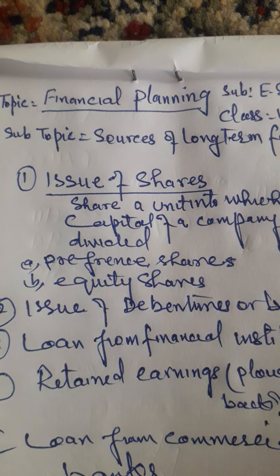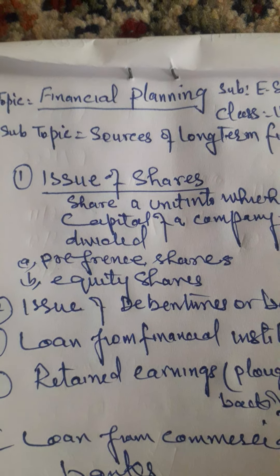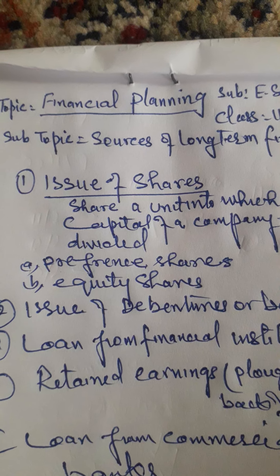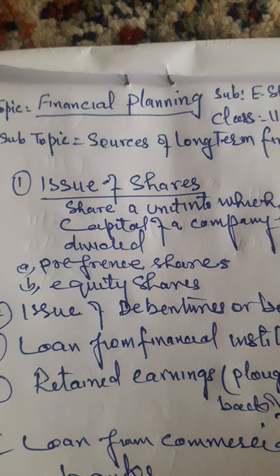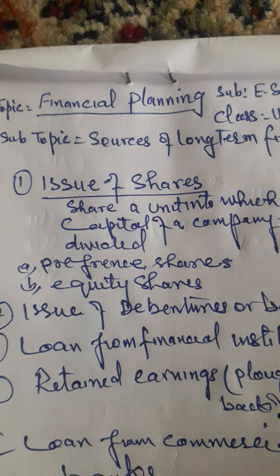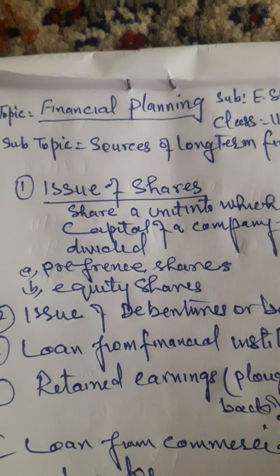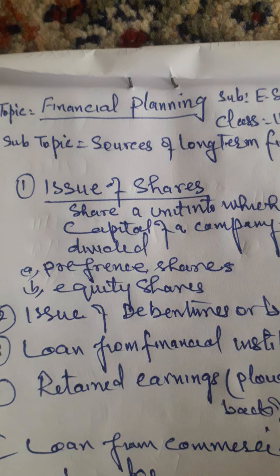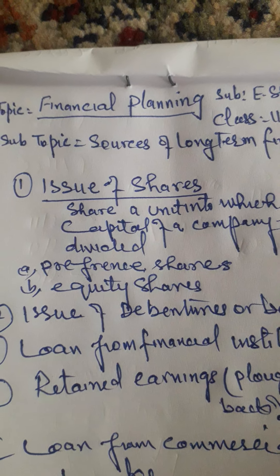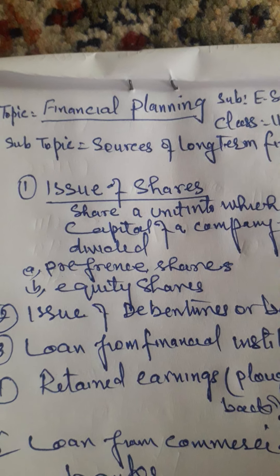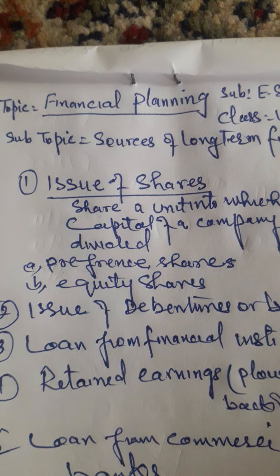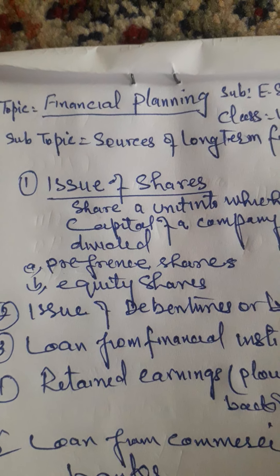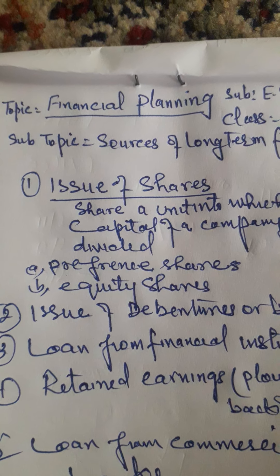When repayment of capital is made, the preference shareholder gets the first repayment. The rate of dividend is fixed in the case of preference shareholders. They have nothing to do with profit and loss — if the company suffers a loss, they are not responsible.